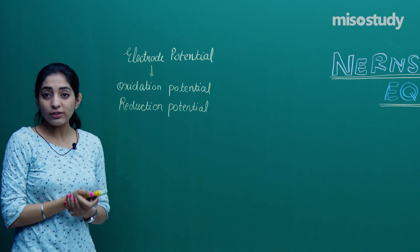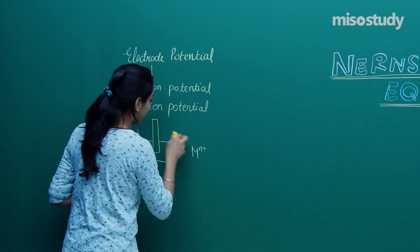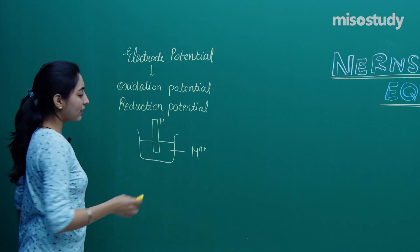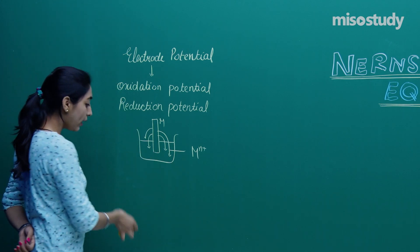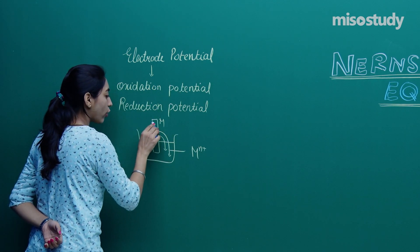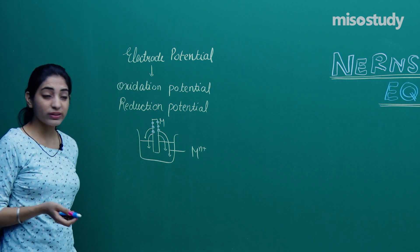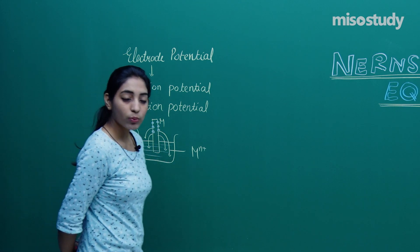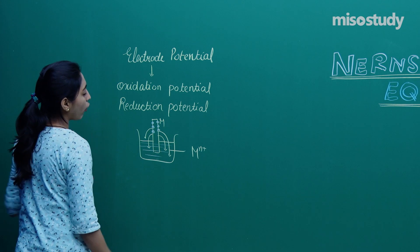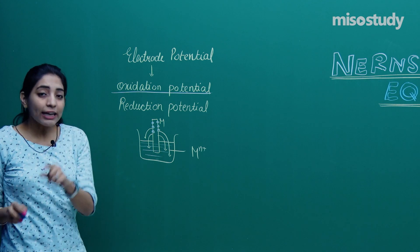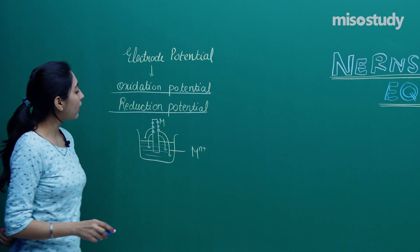What was electrode potential? We said that if any particular metal rod is dipped into the solution of the metal ion Mn+, and oxidation is taking place, then the metal continuously loses electrons and Mn+ gathers in solution. Electrons accumulate on the surface of the electrode, creating a potential difference — that is the electrode potential. If oxidation is taking place, we call it oxidation potential; if reduction is taking place, we call it reduction potential.